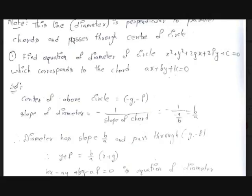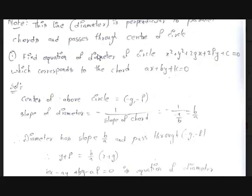Now let's see an example to understand this well. Find the equation of the diameter of the circle x² + y² + 2gx + 2fy + c = 0 (the general form of a circle) which corresponds to the chord ax + by + k = 0. So we need to find the diameter of the general circle that bisects the chord ax + by + k = 0. The center of the circle is (−g, −f). Now, what is the slope of the diameter? We're doing this a slightly different way: the diameter is perpendicular to the chord and passes through the center.